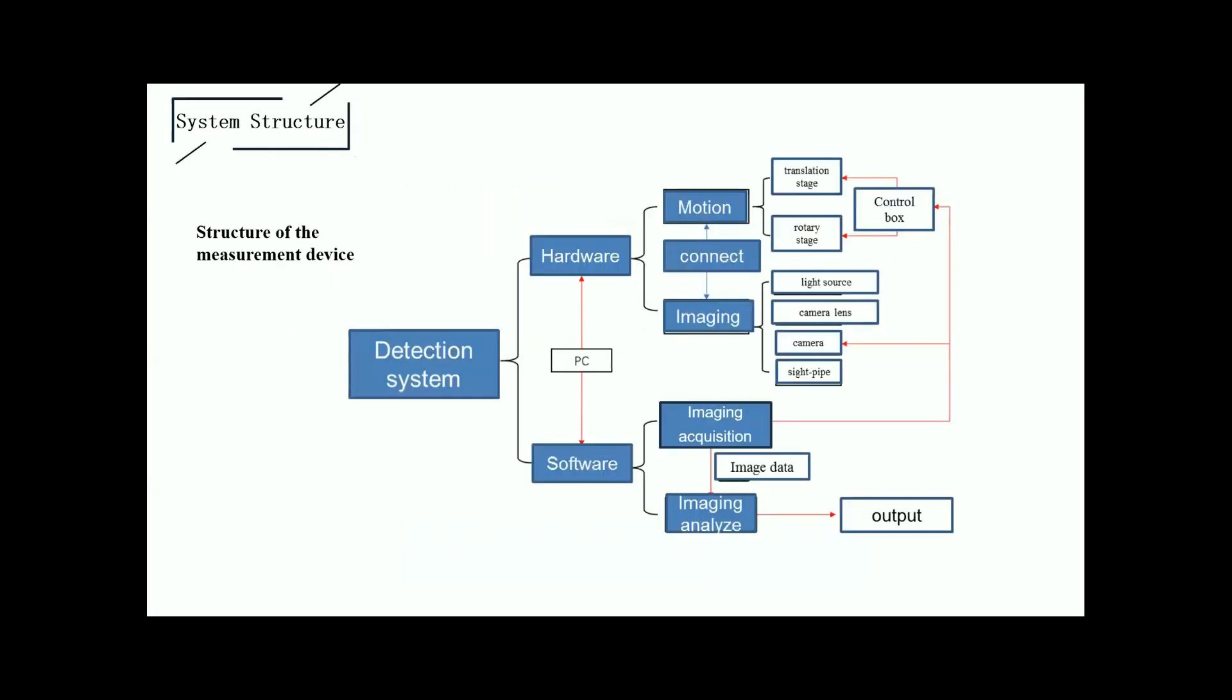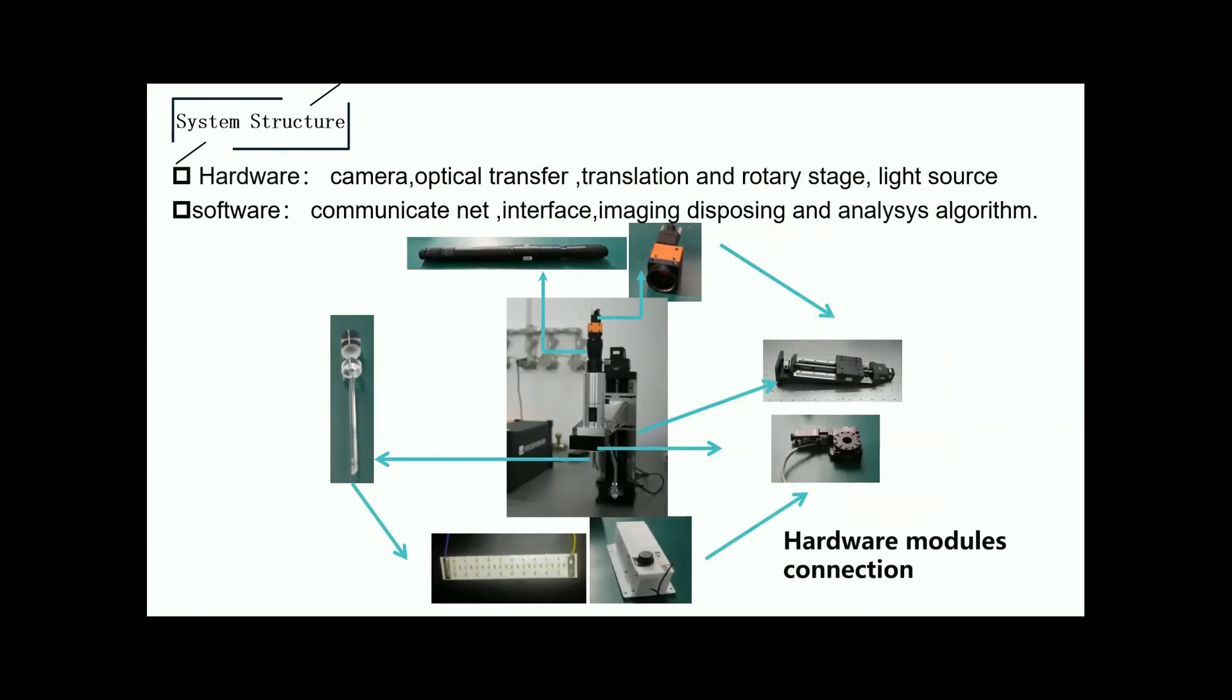Through the previous introduction, we might expect that the structured diagram of the measurement device can be shown above. The main components include hardware, PC, and software. The main functional aspect of hardware includes motion module and imaging module. Software will include image acquisition and image analysis. More specifically, hardware includes camera, optics, translation and rotation stage, and light source. Software includes communication interface, image processing, and analysis of the field range.